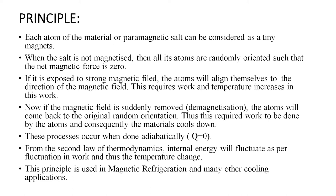There are two cases: magnetization and demagnetization. These processes occur when done adiabatically, where Q equals zero. From the second law of thermodynamics, internal energy fluctuates as per the change in work, and thus temperature changes. During magnetization and during demagnetization, these two work changes fluctuate the internal energy and therefore cause a change in temperature. This principle is used in magnetic refrigeration and many other cooling applications.